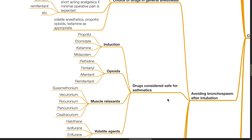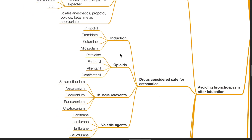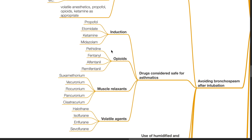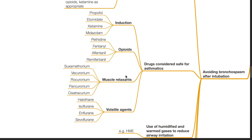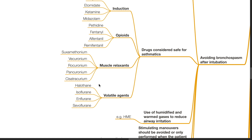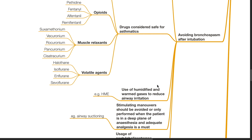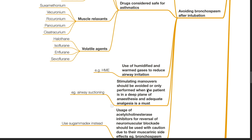Drugs considered safe for asthmatics: for induction — propofol, etomidate, ketamine and midazolam are safe. For opioids — pethidine, fentanyl, alfentanil and remifentanil. For muscle relaxants — suxamethonium, vecuronium, rocuronium, pancuronium and cis-atracurium are safe. Volatile agents such as halothane, isoflurane, enflurane and sevoflurane are advisable. Use humidified and warm gases to reduce airway irritation. Stimulating manoeuvres should be avoided or only performed when the patient is in a deep plane of anesthesia, and adequate analgesia is a must.